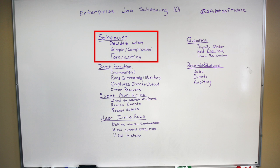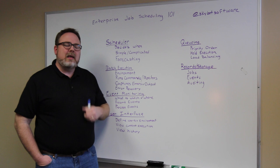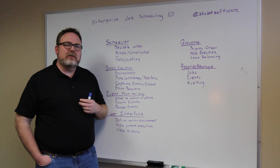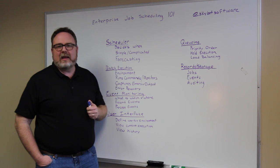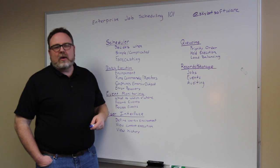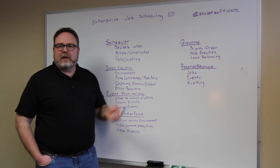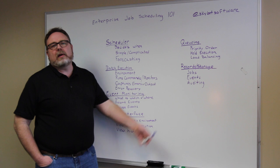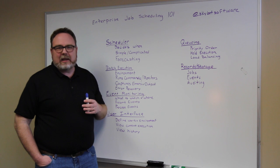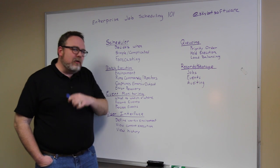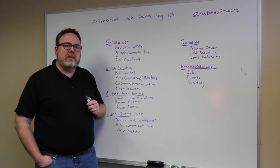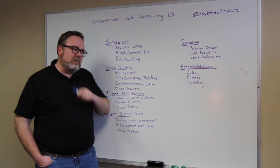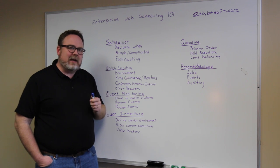So let's talk about the scheduler first. The scheduler decides when the jobs are going to run. That's usually user defined. It can be as simple as run this job every 15 minutes, or run it at 2 o'clock on Tuesday, or it can be as complicated as running a job the third day from the end of the month, but not if it's a weekend, and if it's a weekend, run it on Friday.